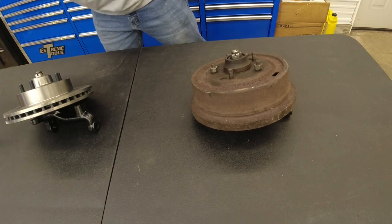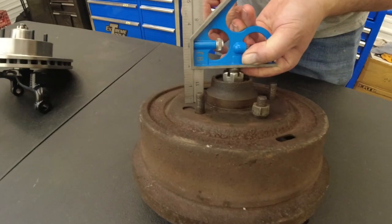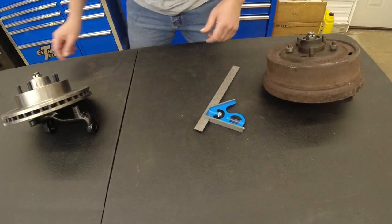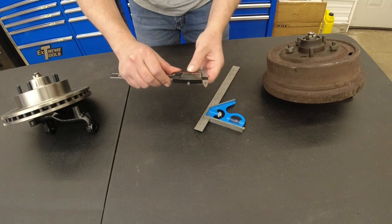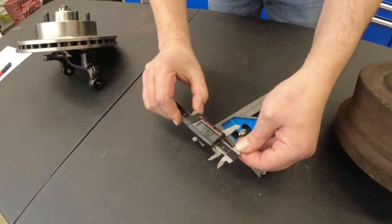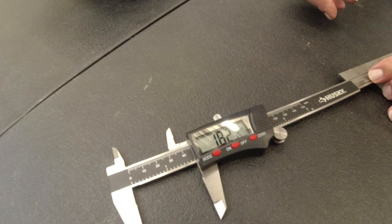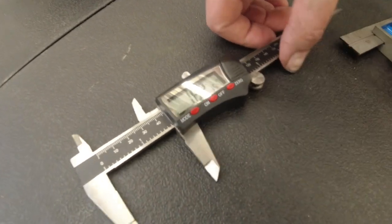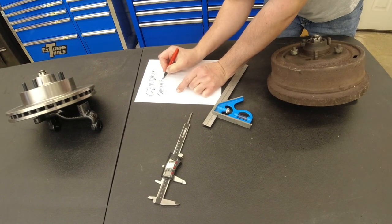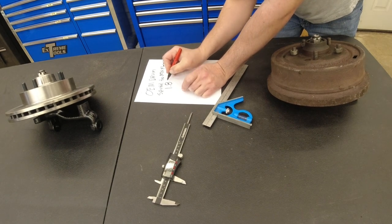Now we're going to take our combination square. We're going to make sure that we are nice and parallel to the spindle, and we're going to measure down to our wheel bolting surface. All right, now we'll get out our handy dandy caliper, and we're going to measure and see what the distance is. What do we got there? 1.82. 1.82 inches. OEM drum spindle to mounting flange, 1.82 inches.